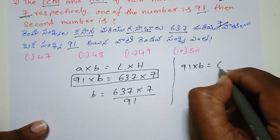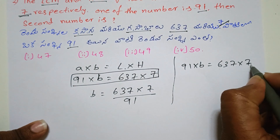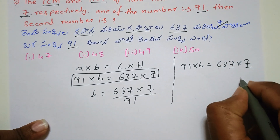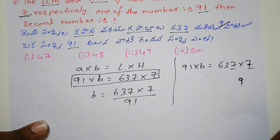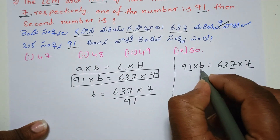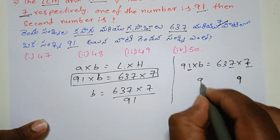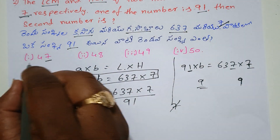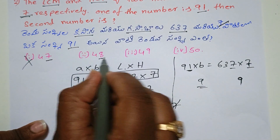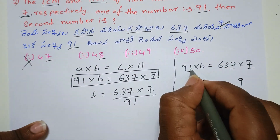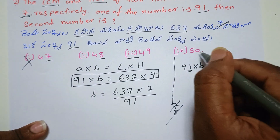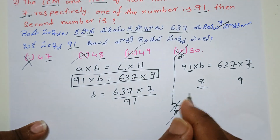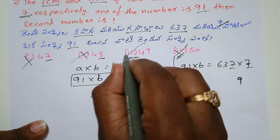91 into B equals 637 into 7. Here 7 cancels. The result is 90, and then we check: 9 into something equals 49. So option 3 is correct, and the answer is 49. If you don't have a shortcut, you will try to calculate the process.